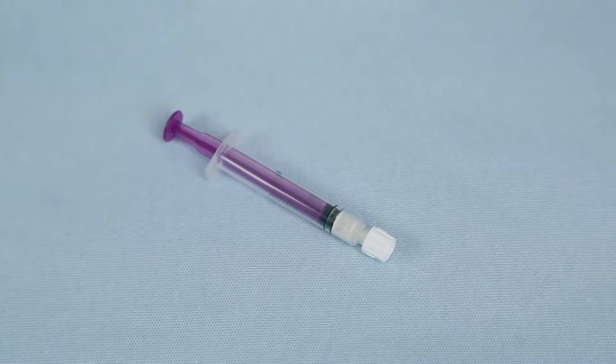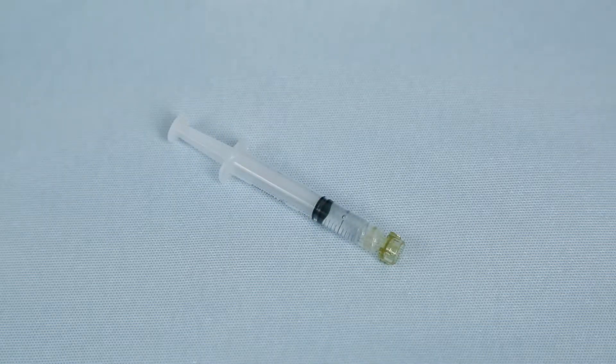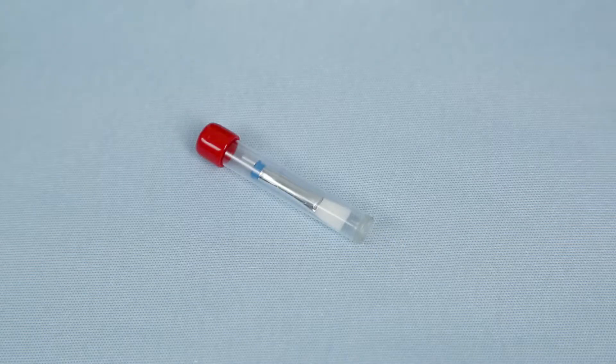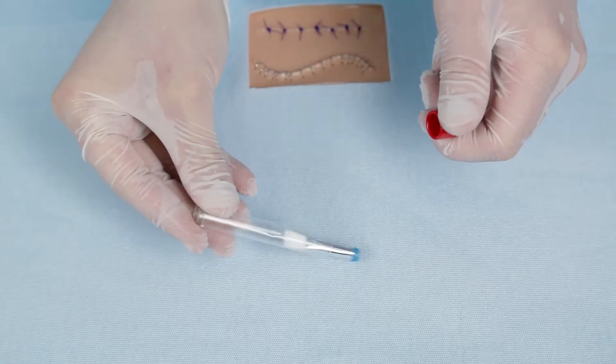One syringe is a 2.5 milliliter syringe containing 50 milligrams solid white powder hydrogel polymer and the other is a three milliliter syringe containing liquid phosphate buffer solution. Remove the sterile application brush from the brush case and have it ready for use.